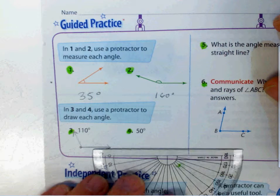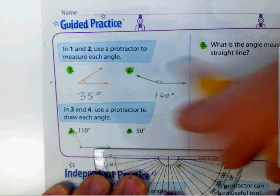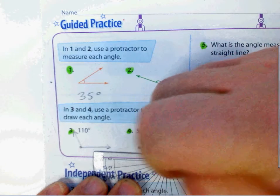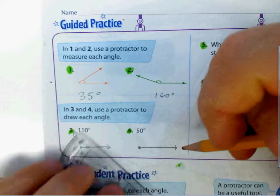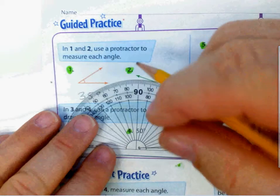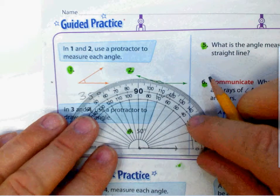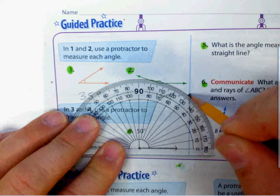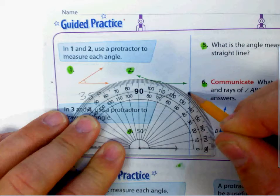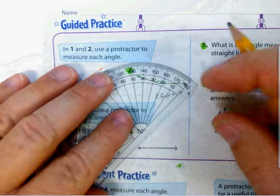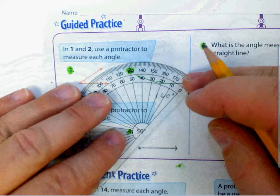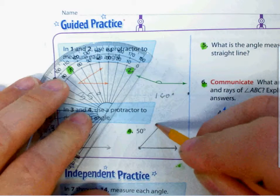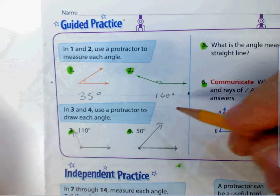Next, on number four, I'm going to draw a ray and put a dot right there. I'll put my protractor right on my dot and line it up with my zero line. I'm looking for 50 degrees — that's right here. I'll put a dot up here, line up my protractor, and draw my line up. That's going to be my 50 degree angle.